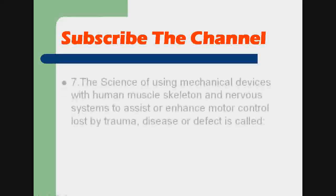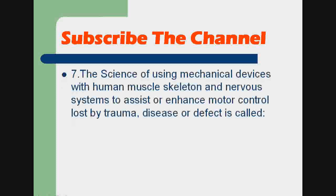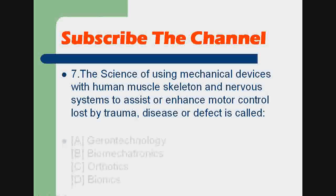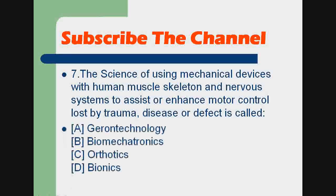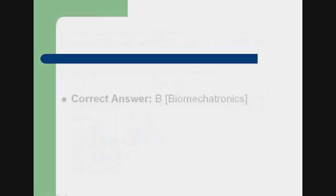Options: a) aspartame, b) saccharin, c) sucralose, d) cyclamate. Correct answer: c) sucralose. Question 7: The science of using mechanical devices with human muscle, skeleton, and nervous systems to assist or enhance motor control lost by trauma, disease, or defect is called: a) gerontechnology, b) biomechatronics, c) orthotics, d) bionics.